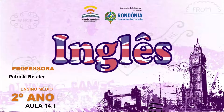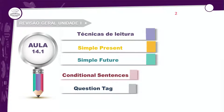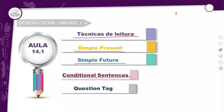A aula 14.1 com a teacher Patrícia Recher é uma coisa que você tem que colocar na cabeça. A gente viu nessa Unit 1, basicamente, presente e futuro. E obviamente, a gente viu também a questão das técnicas de leitura. Então, tem técnicas de leitura, simple present, simple future, as conditional sentences, que envolvem presente simples e futuro simples. E as question tags, que também envolvem presente e futuro.